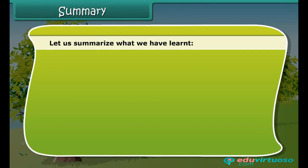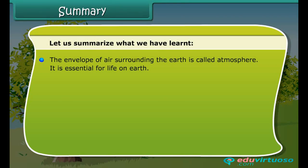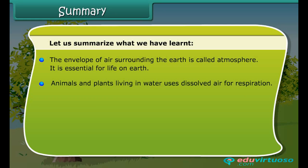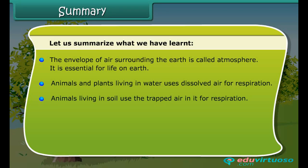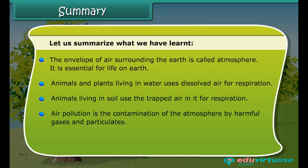Let's summarize what we have learnt. The envelope of air surrounding the Earth is called the atmosphere, and it is essential for life on Earth. Animals and plants living in water use dissolved air for respiration. Animals living in soil use the trapped air in it for respiration. Air pollution is the contamination of the atmosphere by harmful gases and particulates, and it can be reduced by taking a few simple measures.